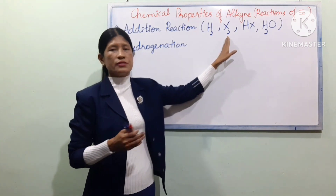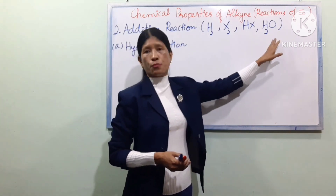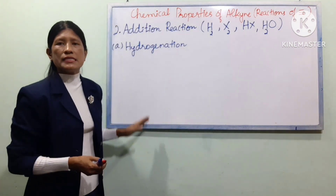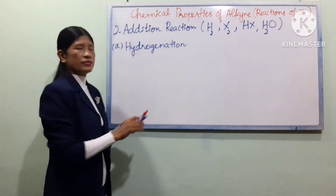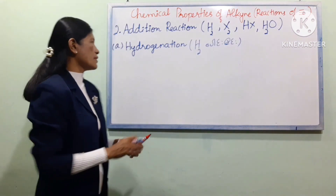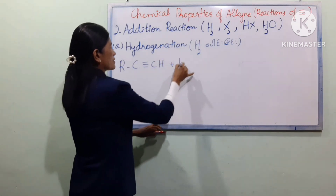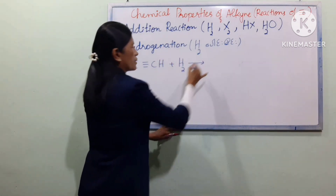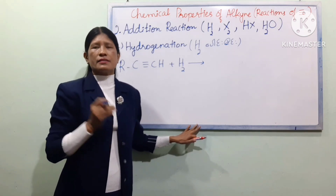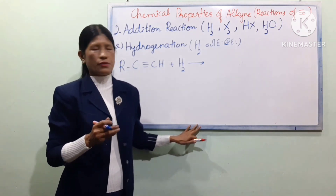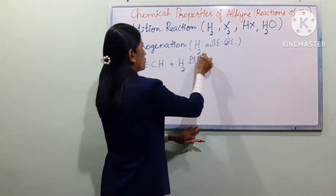HX addition is hydrohalogenation. H2O addition is hydration. The general hydrogenation equation is: R–C≡C–H + H2, with a catalyst of Pt or Ni at 300 degrees Celsius.